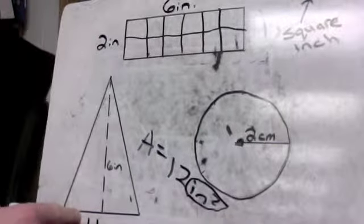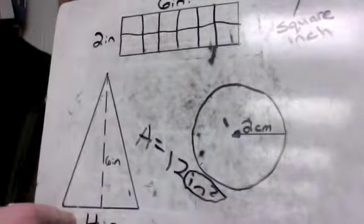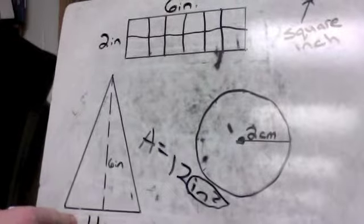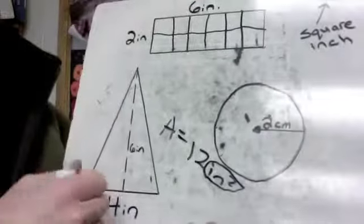Same thing with this triangle. Our answer to this triangle is 12 inches squared. That means that we can fit 12 of these in here.